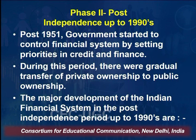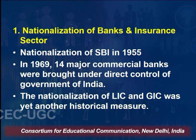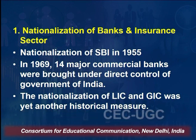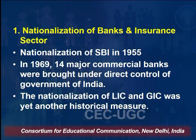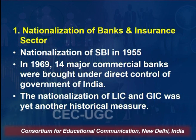Major developments in the Indian financial system post-independence include the nationalization of SBI in 1955 — it was the largest bank at that time, previously owned by some industrial houses. In 1969, 14 major commercial banks were brought under direct government control, transferring their ownership to the government and making them public sector banks. LIC and GIC were also nationalized — life insurance was controlled by LIC and general insurance by the General Insurance Company.